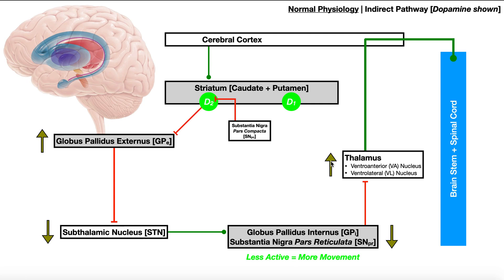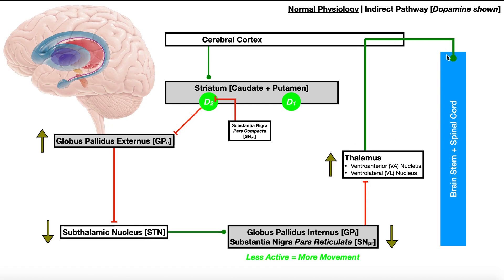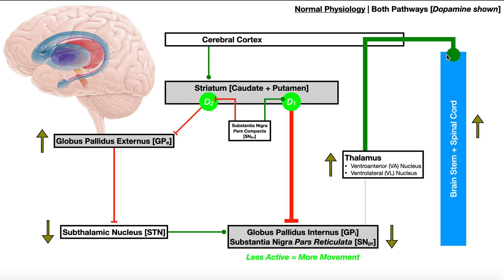So instead of totally suppressing a movement, we're going to mostly suppress it. This is a way that dopamine can fine-tune everything. What we see with the substantia nigra pars compacta and dopamine across both pathways is that dopamine always is pro-movement — it modulates the direct pathway to get a little bit more movement and modulates the indirect pathway to also get a little more movement. That is the normal physiology.